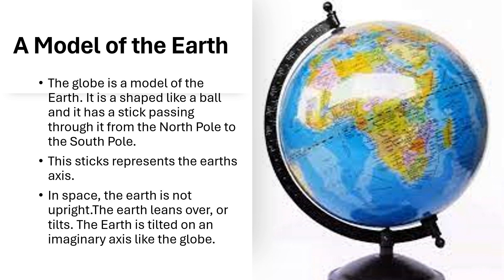In space, the Earth is not upright. It means it is not straight. The Earth leans over or tilts. The Earth is tilted on an imaginary axis like the globe.